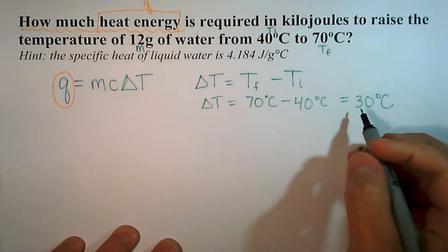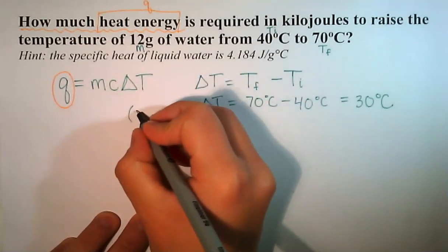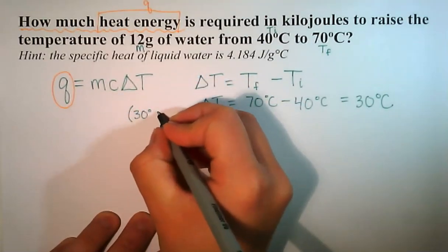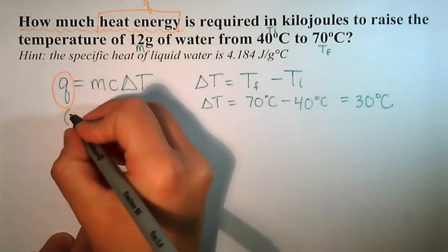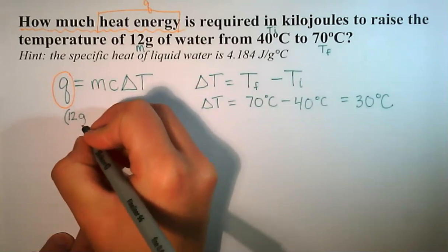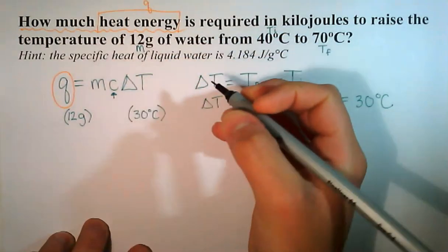So now we have our delta T equals 30 degrees. I'm going to go ahead and plug that in, 30 degrees Celsius. And we have our mass, 12 grams. So all that's left is we need our specific heat, our value of C.